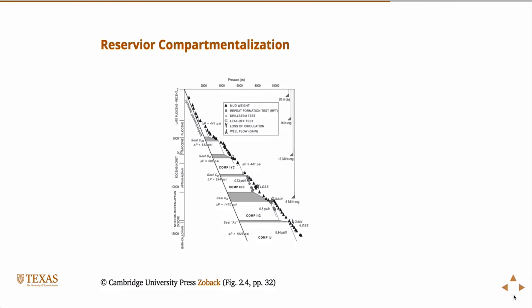This is a field in Egypt. The interesting thing about this plot is that we talk about compartmentalization. Compartmentalization is just sort of what it sounds like. You could have a region, a very well-connected, highly permeable region, say sand, that above and below is encapsulated by an impermeable, say, shale.